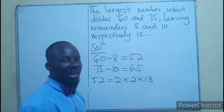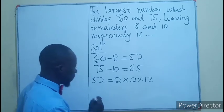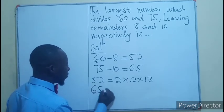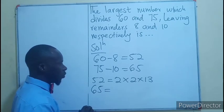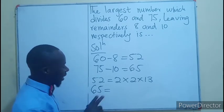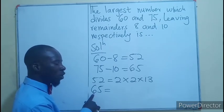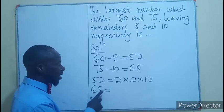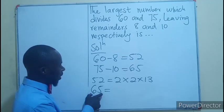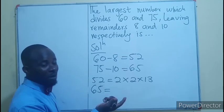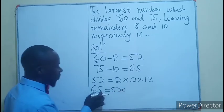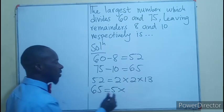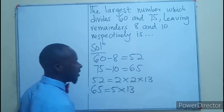Then 65, can 2 divide this? I believe not. We move to the next prime number which will be 3. 3 cannot go into 5. Let's go to 5. 5 can go here, 5 times what gives 65? I believe that will be 13.